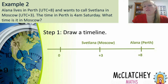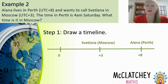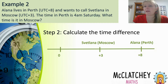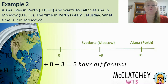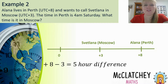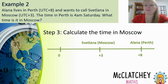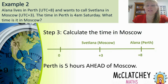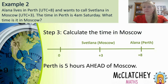On the timeline we can see a five hour time difference between Svetlana and Alana. We need to show the calculations for full marks. So: positive 8 subtract 3, because 'time difference' means subtraction, gives us that five hour time difference — which we could definitely see on the timeline. Now that I've calculated the time difference, I need to work out what time it is in Moscow.